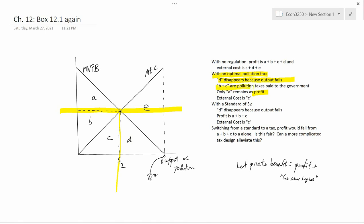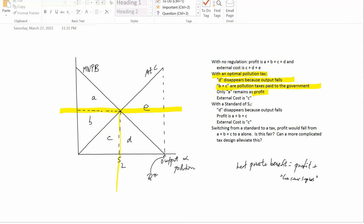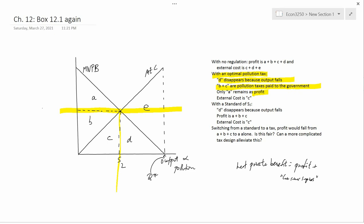Then b plus c are the pollution taxes paid to the government. The tax rate is this, and the amount of output that's taxed is s2. So b plus c is the total tax revenue.